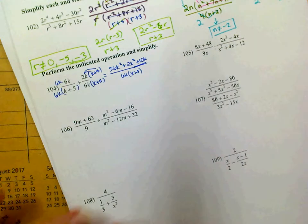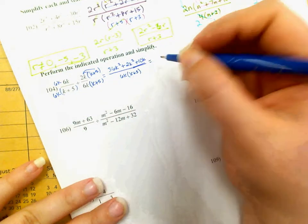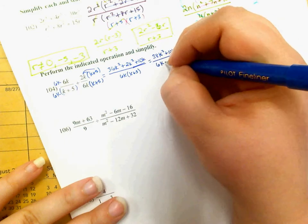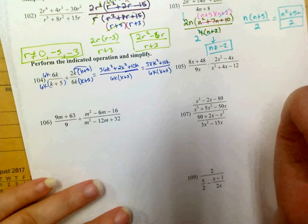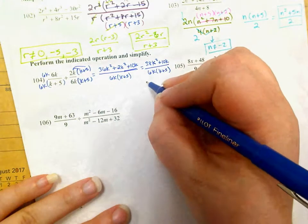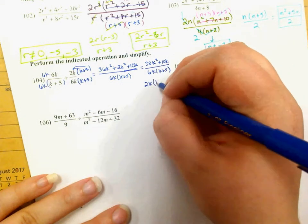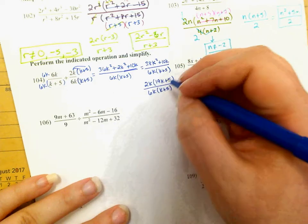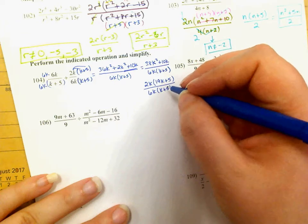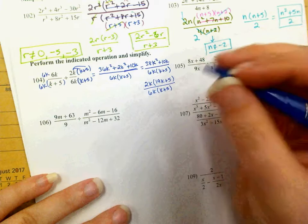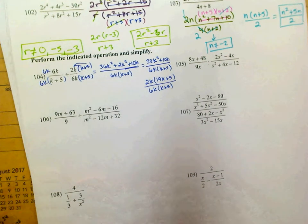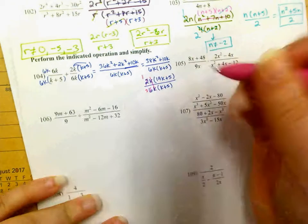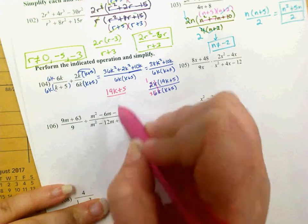Combining 36k squared and 2k squared gives 38k squared plus 10k, all divided by 6k times k plus 5. I can factor out a 2 and a k from the numerator, leaving 19k plus 5, over 6k times k plus 5. The k plus 5 factors do NOT cancel — 19k plus 5 is not the same as k plus 5. But the k's in front simplify, and 2 and 6 become 1 and 3. Final answer: 19k plus 5 divided by 3 times k plus 5, or 3k plus 15.